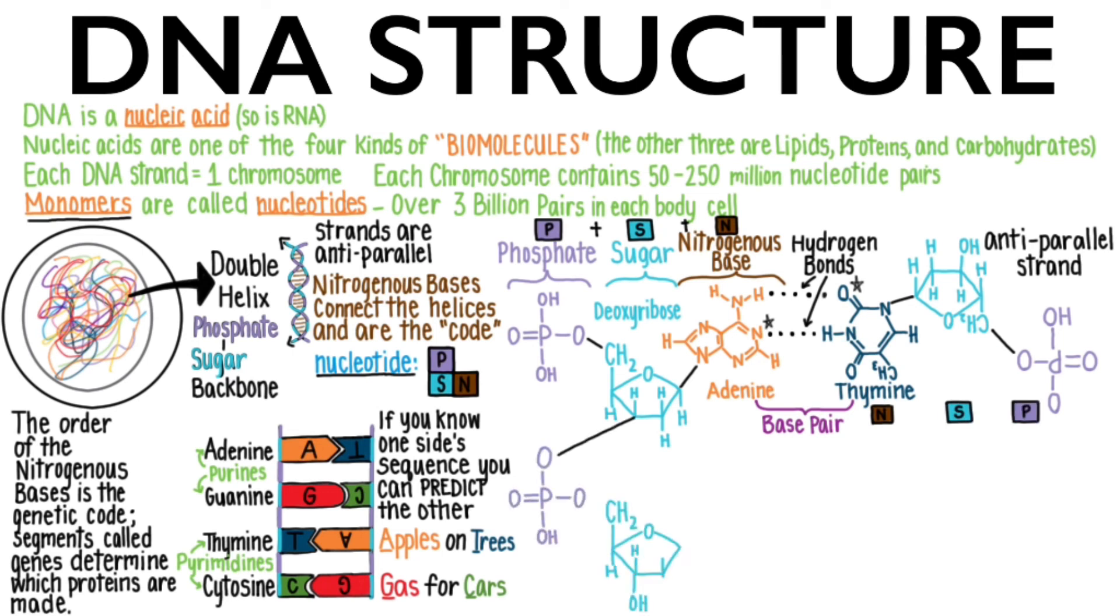We can look at another pair of nucleotides. The big purine guanine has to bond with the smaller cytosine. These are able to form three hydrogen bonds. Here, here, and here.